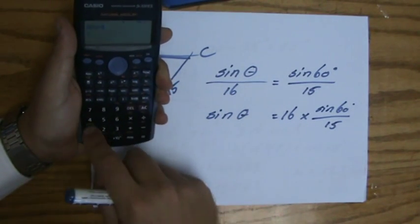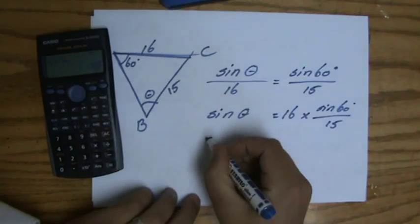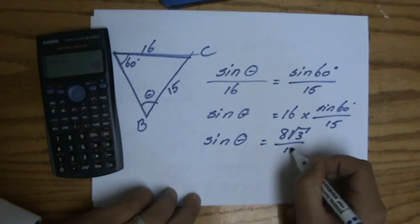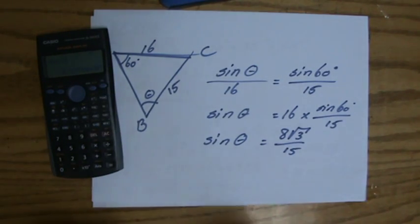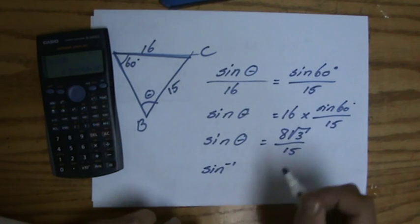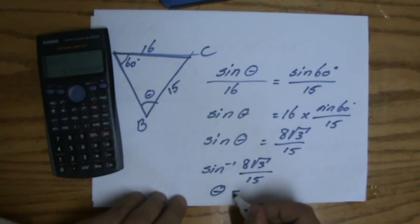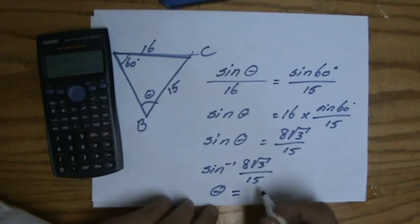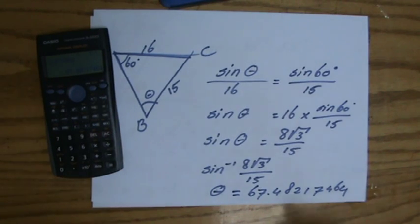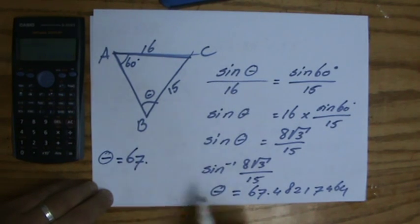So the sine of theta equals then 16 times the sine of 60 degrees over 15. Make sure you've seen my videos on the sine rule. Sine of 16 equals divided by 15 equals times 16 equals. Make sure you're able to use a calculator. It's going to give me this answer. And to a decimal that is 0.92 and a lot more decimals. However, that's the sine of theta. So you have to do the inverse. You have to do shift sin to find the actual angle. So that's why I didn't write down all those decimals yet. So your angle equals shift sine of that answer.